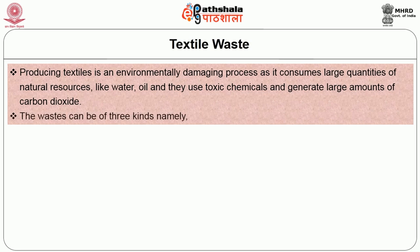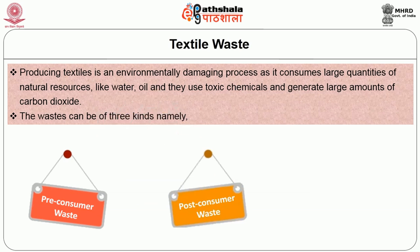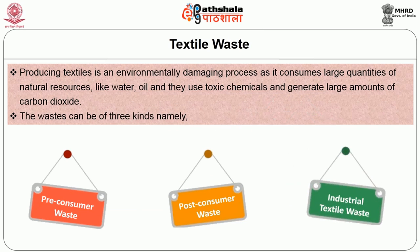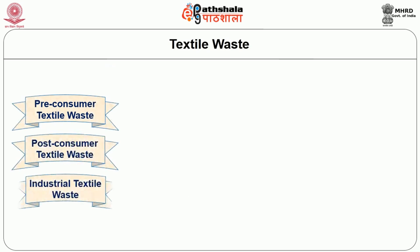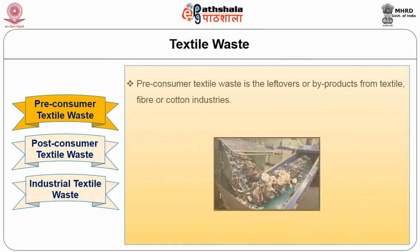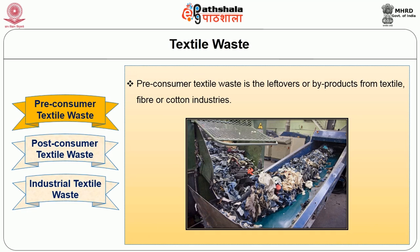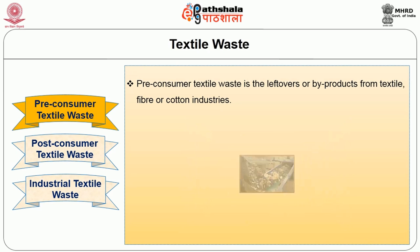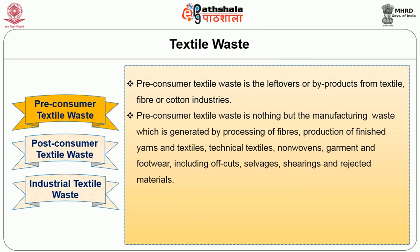Textile waste can be of three kinds: pre-consumer waste, post-consumer waste, and industrial textile waste. Pre-consumer textile waste is the leftovers or by-products from textile fiber or cotton industries — it is the manufacturing waste generated by processing of fibers, production of finished yarns and textiles, technical textiles, non-wovens, garments and footwear, including off-cut selvedges, shearing, and rejected materials.